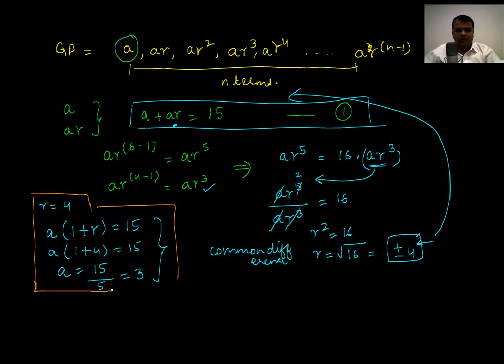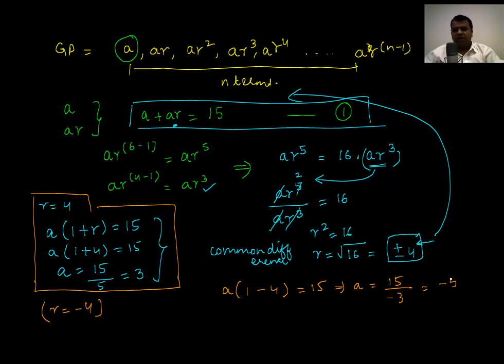If instead of r = 4, I take r = -4, then what do I get? In the same equation, I will get a(1 - 4) = 15. So a = 15 divided by -3, or -5.